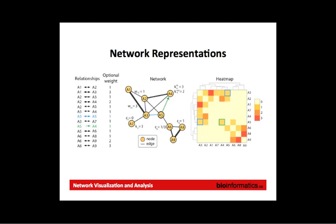An arrow here signifies directionality — the connection only goes from node 5 to node 4. Some terminology: these circles are called nodes and the lines are called edges. Sometimes nodes are called vertices. This terminology comes from computer science and math in the field of graph theory, so sometimes networks are referred to as graphs. In biology, we tend not to use the term 'graph' since most people associate it with a plot. Network seems more easily recognized.